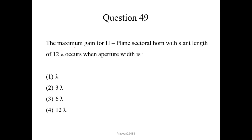Now question 49. The maximum gain for an edge plane sectoral horn of slant length Lh equals 5 lambda occurs when aperture width W is calculated as square root of 3 lambda Lh. So here slant length is given which is 5 lambda. So on solving this we will get 6 lambda. This is our option. Question 50.